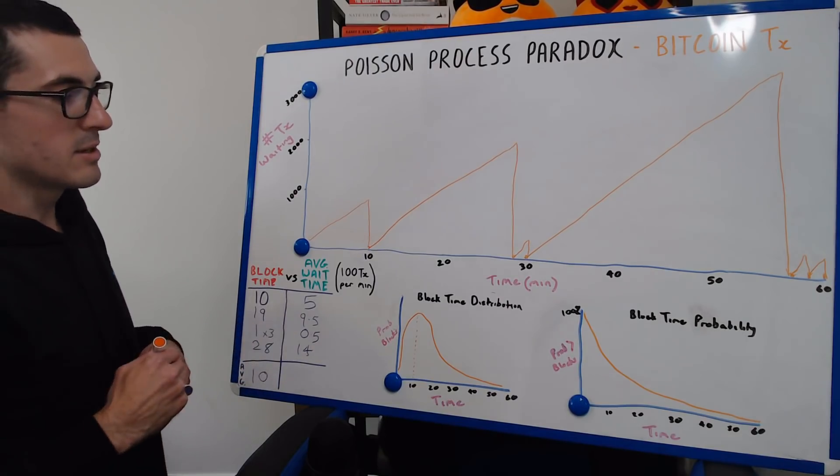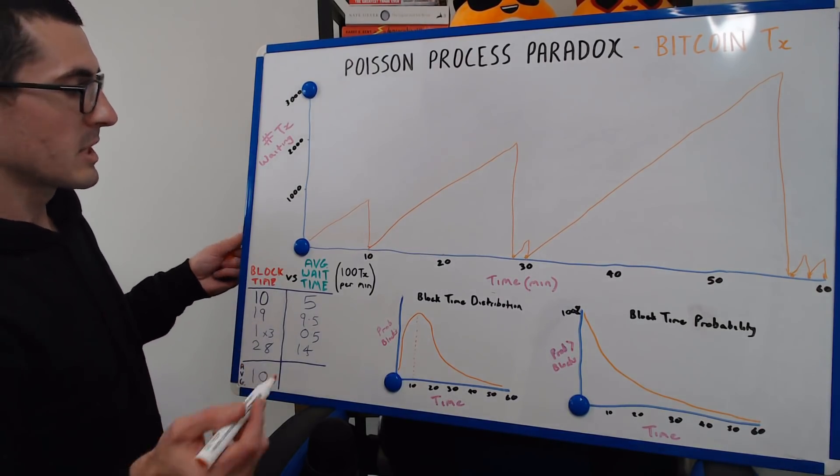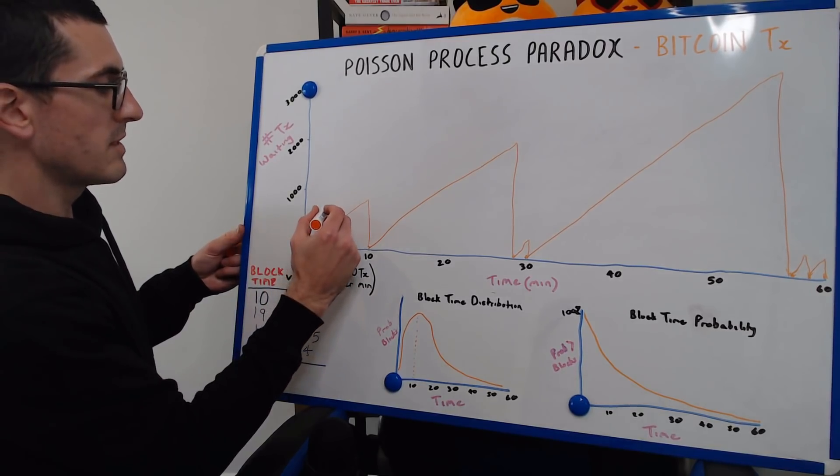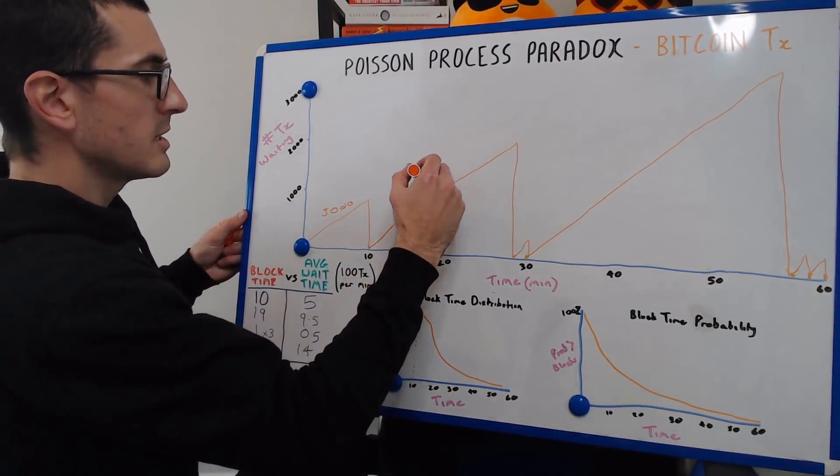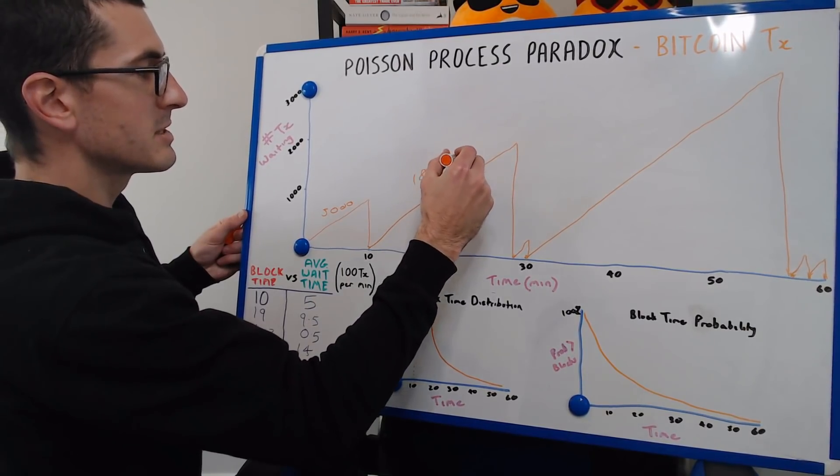So when we look at the number of transactions times the average minutes that they waited, let's call this transaction minutes weighted, 5,000 for the first block, 1,850 for the second block.